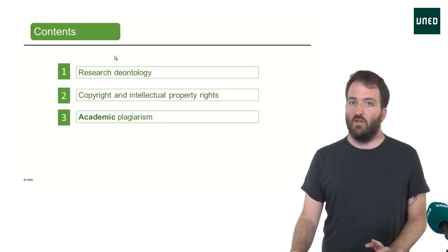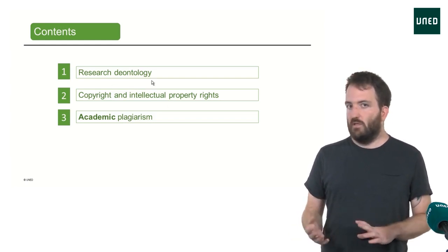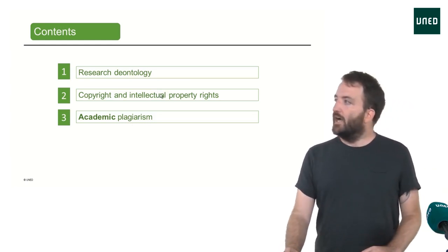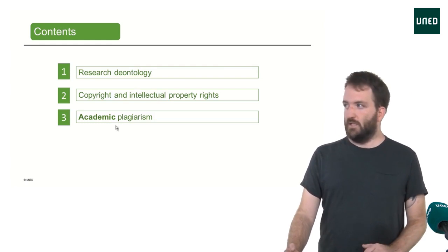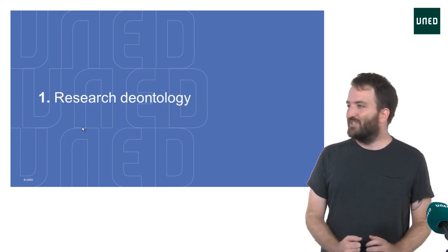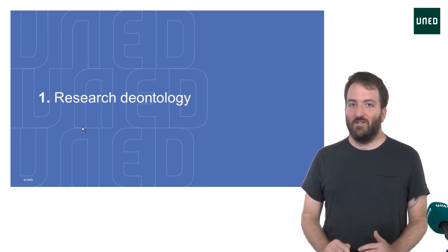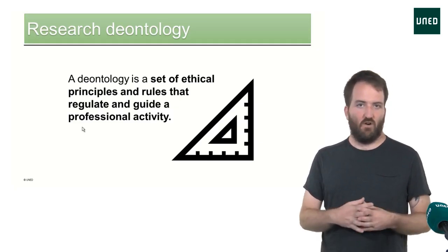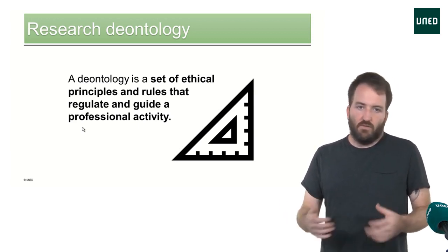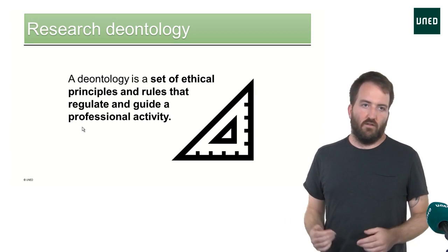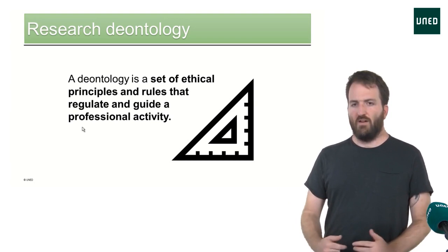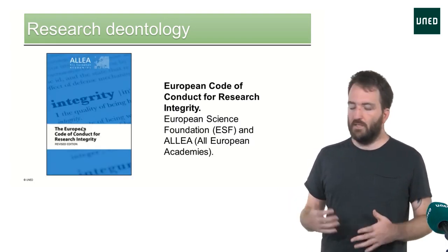what a deontology is, and then we'll go to the legal aspects — about intellectual property rights or copyright legislation — and then to the last point which is academic plagiarism. Deontology is basically a set of standards or rules that guide us ethically in any field, so our research deontology sets the rules, the ethical guidelines for us to follow. There are many examples that we'll see in the module.